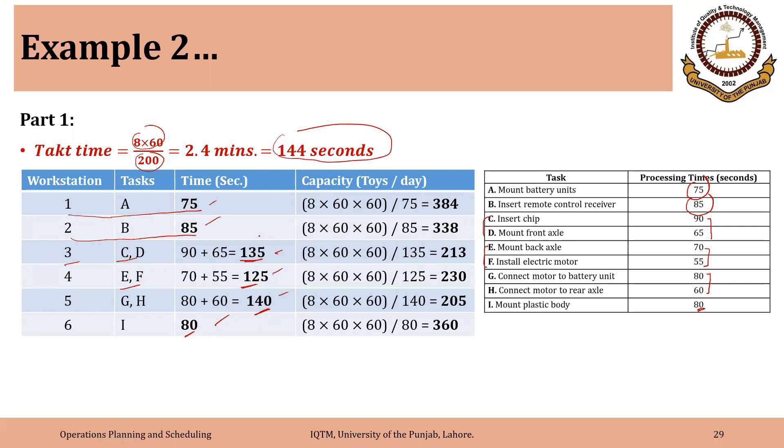Of course, you could think of some other possibility as well. We could for example have task A, B and C as workstation 1, 2 and 3. And then we could combine say D and E instead of C and D. So there could be other possibilities as well.